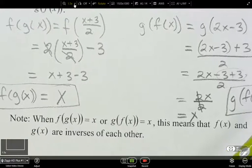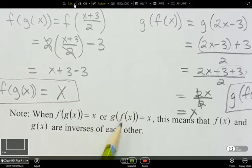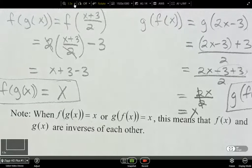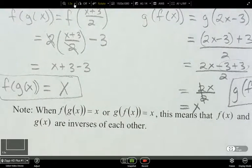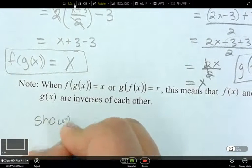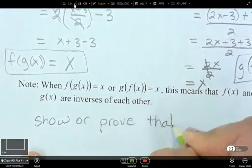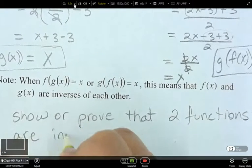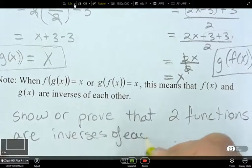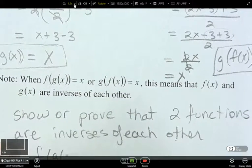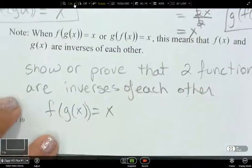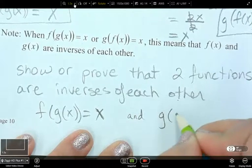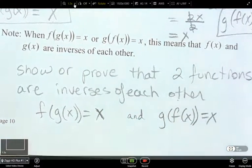So they actually happen to both equal x. So when f of g of x equals x or when g of f of x equals x, this means that f of x and g of x are inverses of each other. So this would be a good way to show or prove that two functions are inverses of each other.